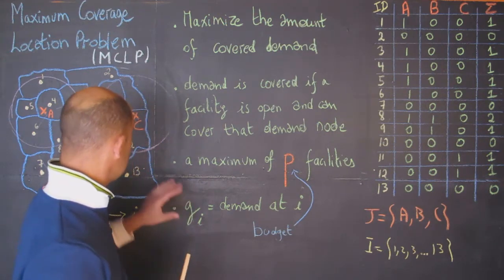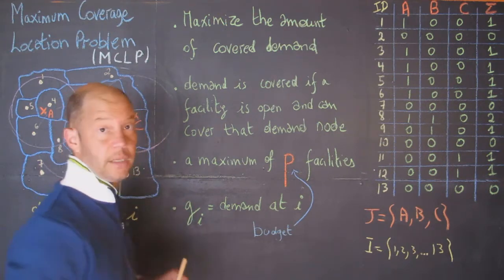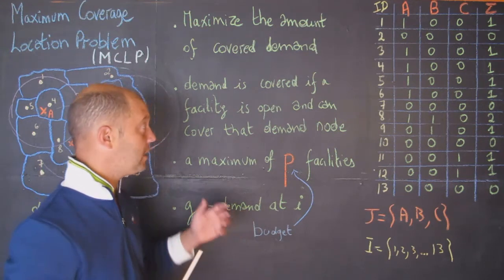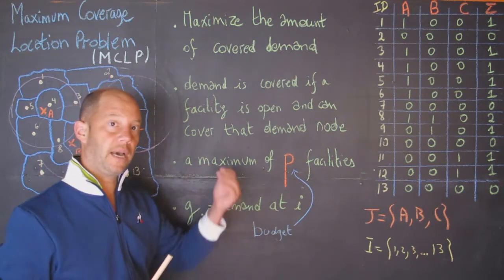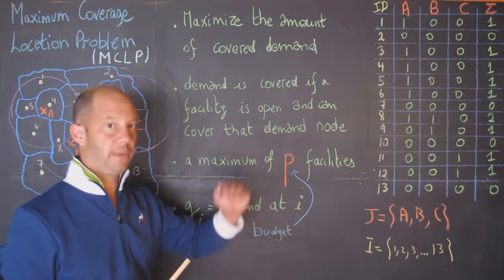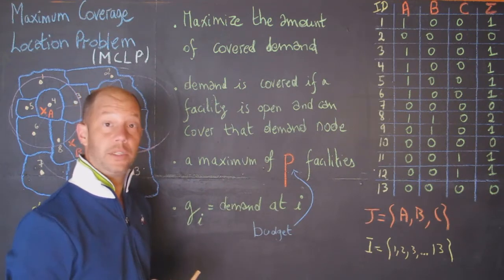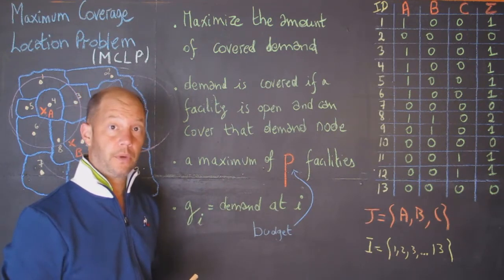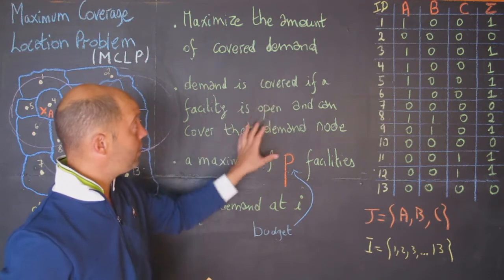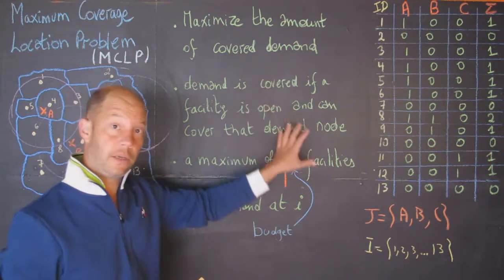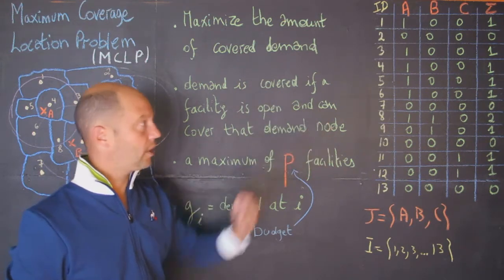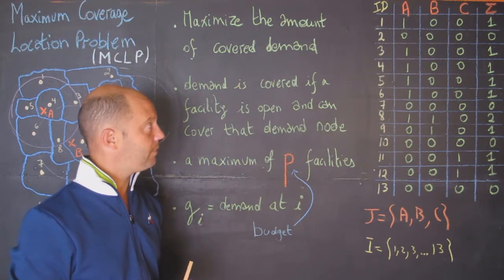In the example we'll show in a moment, we will assume that demand is 1 everywhere, but afterwards I will show other examples where the demand will change. Let's first put this in mathematical form, and then we will work this out like we did previously.